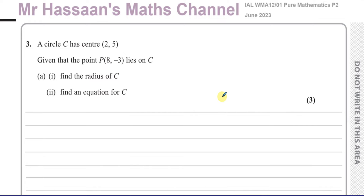This question number 3 is about a circle which has center (2, 5). Given that the point P (8, -3) lies on the circle C, find the radius of C and find an equation for C. The radius of a circle is given by the distance from the center of the circle to any point on the circle, both of which we know.